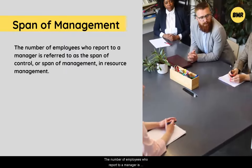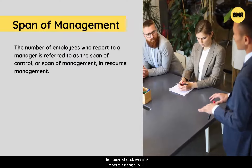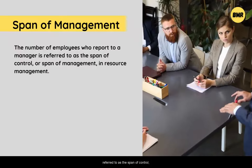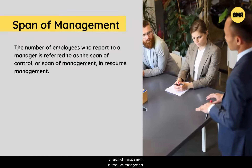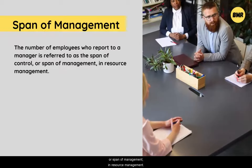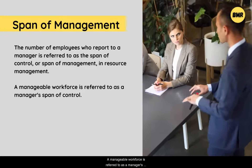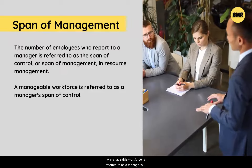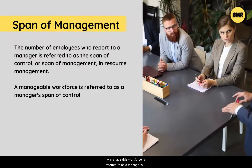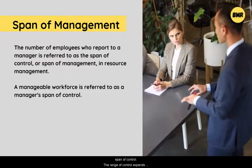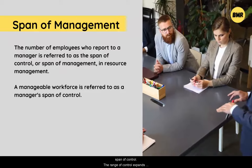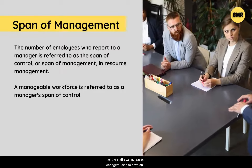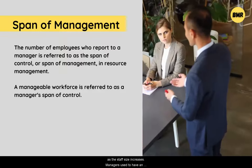Definition: the number of employees who report to a manager is referred to as the span of control or span of management. It is clear that within an organization you will find a manager and employees who report to him. A manageable workforce is referred to as a manager's span of control, and the range of control expands as the staff size increases. Managers used to have an average of four employees to oversee in the past, but due to the introduction of information technology, which made monitoring and controlling easier, it later rose to more than 10 employees per manager.